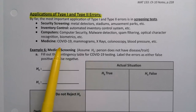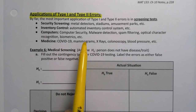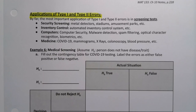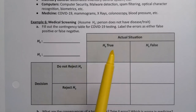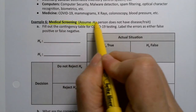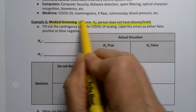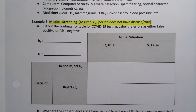We're going to focus on medicine — COVID-19 testing, mammograms, x-rays, colonoscopies, blood pressure, etc. These are medical screening tests, not medical diagnostic tests where they actually take a tissue sample — that's a different type of test. In general, when doing medical screening, we assume the person does not have the disease or trait.